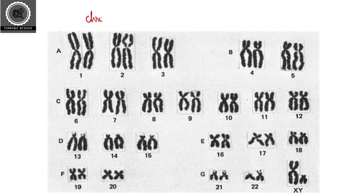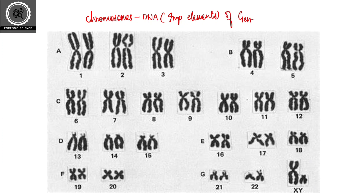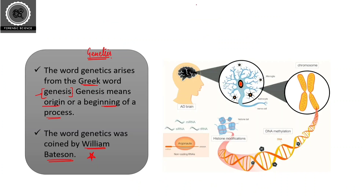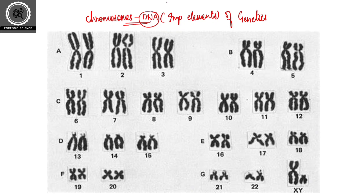In humans, we have chromosomes and DNA, which are very important elements of genetics. Chromosomes and DNA are closely associated with each other. DNA is a genetic material, and chromosomes are the vehicles which carry characteristics from one generation to the other. We already noted that 50 percent of DNA comes from our father and 50 percent from our mother — chromosomes and DNA are those vehicles of heredity.